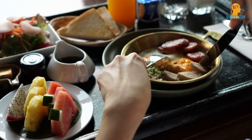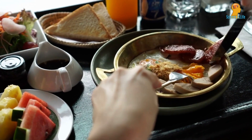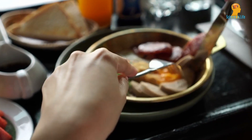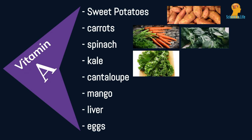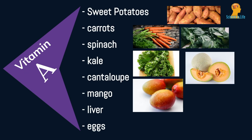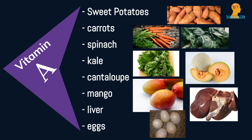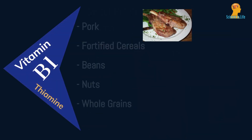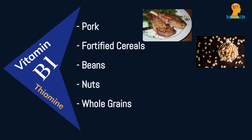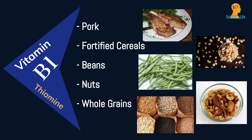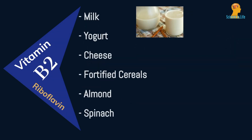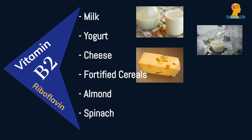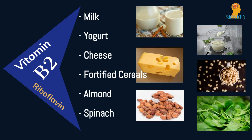Here are some examples of foods rich in different vitamins. Vitamin A: sweet potatoes, carrots, spinach, kale, cantaloupe, mango, liver, and eggs. Vitamin B1: pork, fortified cereals, beans, nuts, and whole grains.